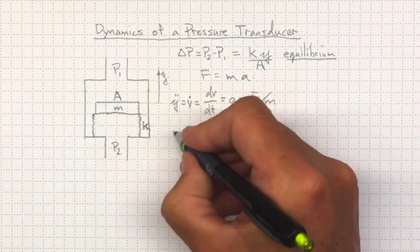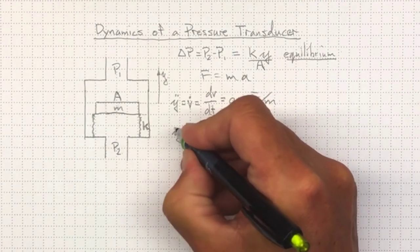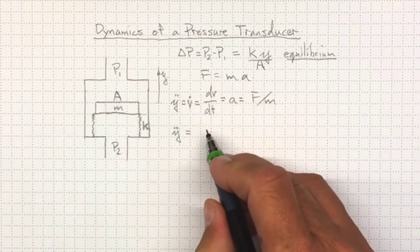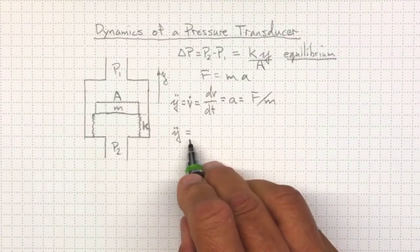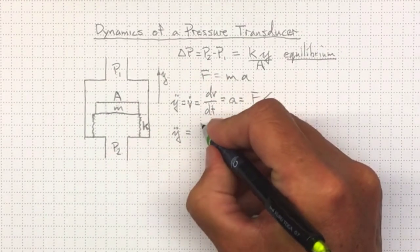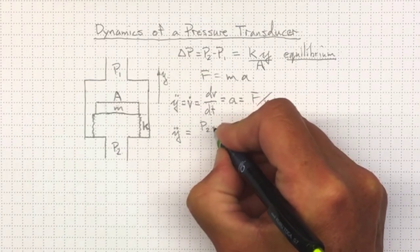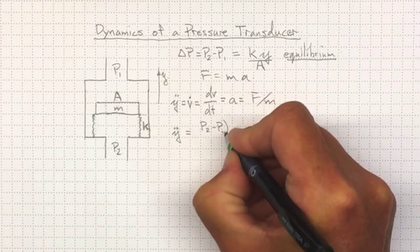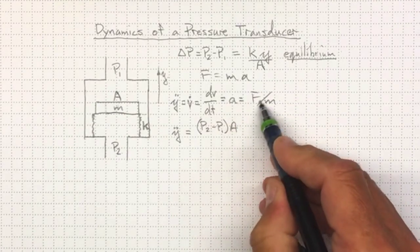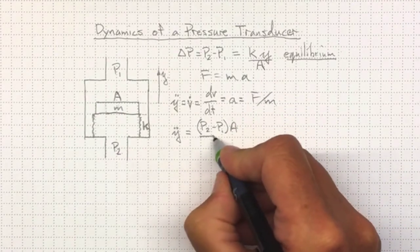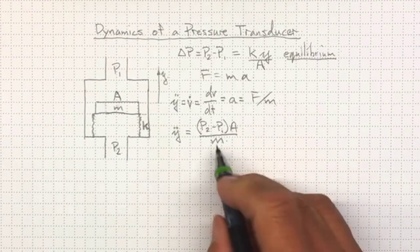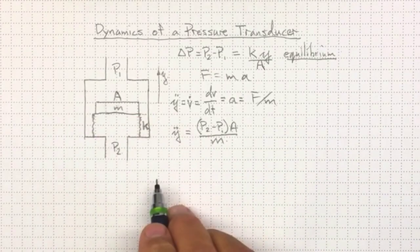So we can write Y double dot as being equal to, well, there's the force going upwards on the diaphragm due to the pressure. That's P2 minus P1 times the area. And we want the force divided by the mass, so divided by the mass. That's the force that's acting upwards due to the pressure.